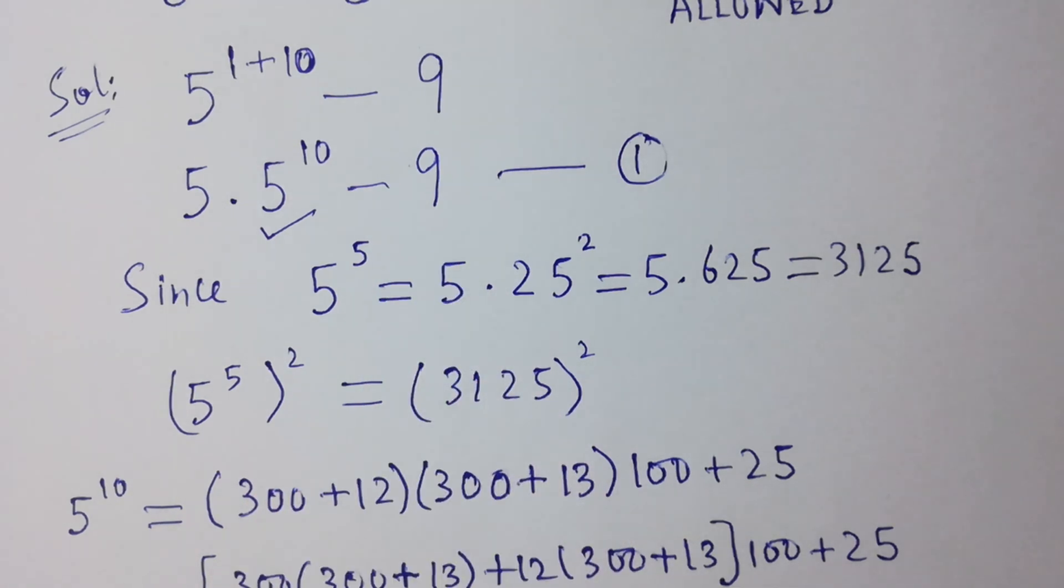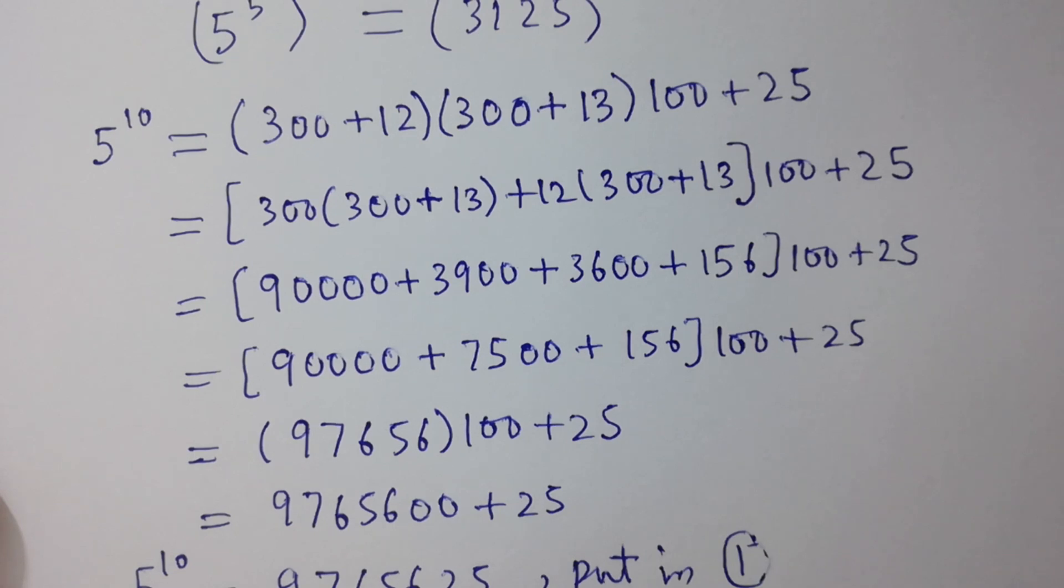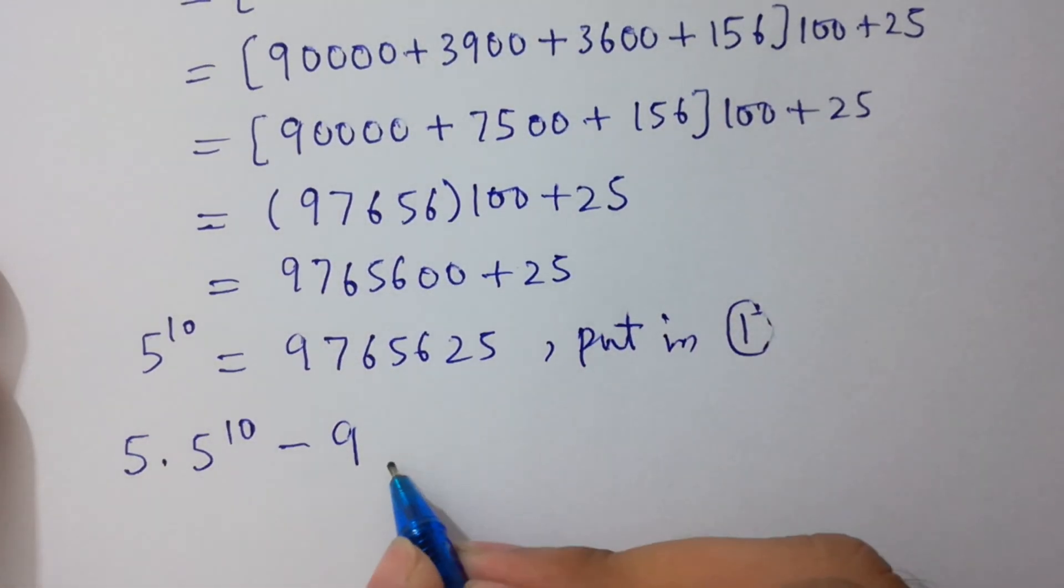5 times 5 to the power 10 minus 9. Put the values here: 5 times 5 to the power 10 equals...